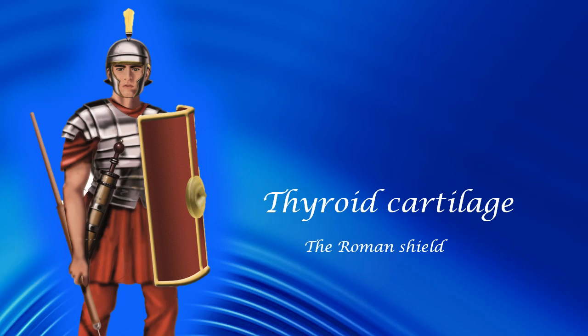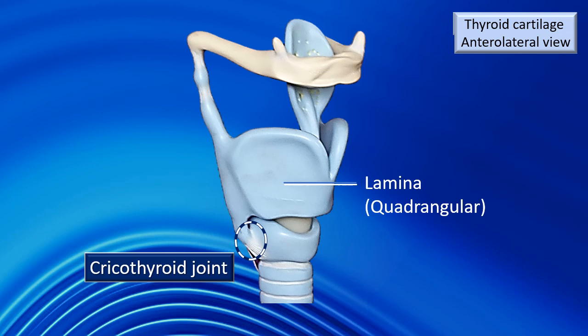Although we have identified the cartilages, let's focus today only on the thyroid cartilage. I have labeled it as the Roman shield — the way it looks, it appears as some kind of armor or protective shield. There are various parts of the thyroid cartilage. The largest part is the lamina, a huge quadrangular part — that is virtually the body of the cartilage. It has an upper projection and a lower projection. The upper projection is called the superior cornu; the lower projection is called the inferior cornu. The inferior cornu joins the cricoid cartilage to form a joint — the cricothyroid joint.